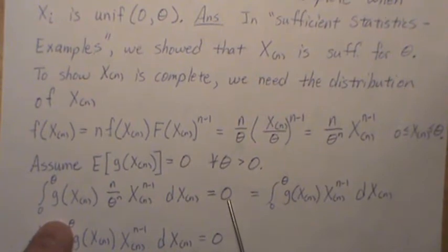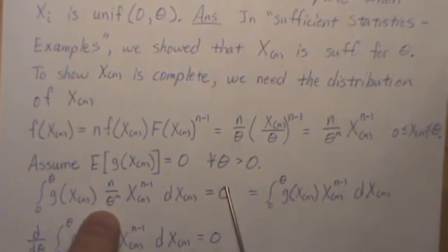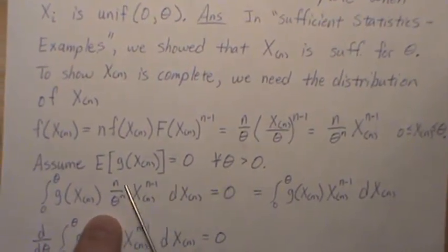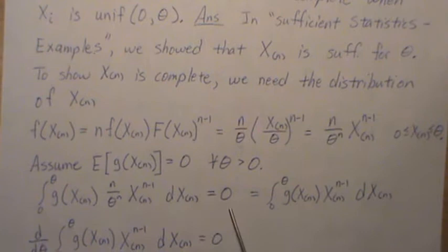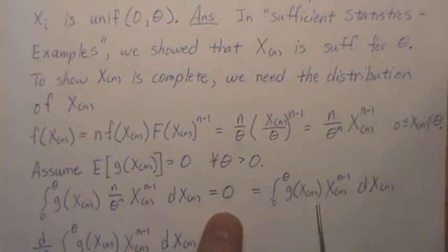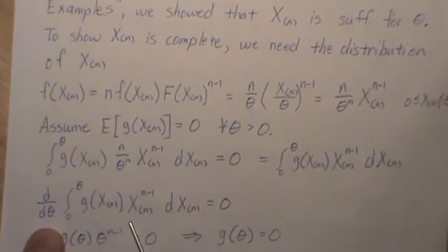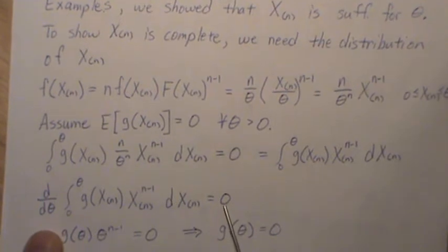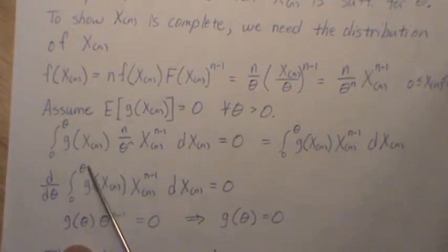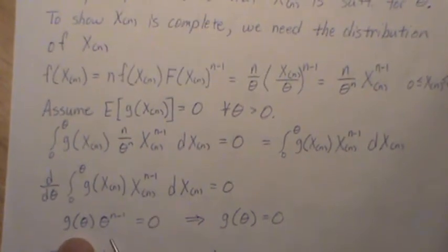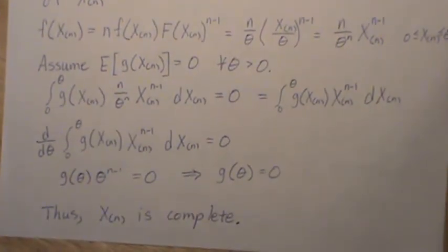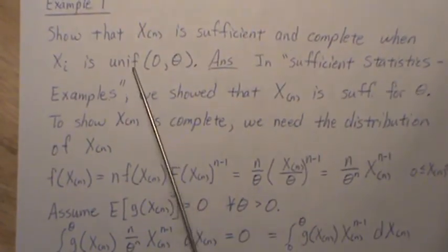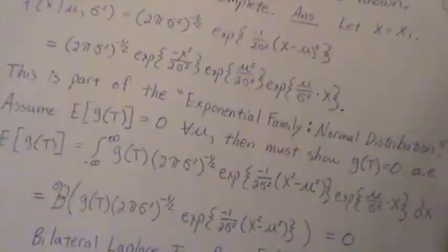Notice that theta and n are not part of the integration, so we can multiply them over and divide, and we get this integral still equal to zero. Taking the derivative of both sides — the derivative of zero is zero — the fundamental theorem of calculus says we just plug in for our variable and it equals zero. This expression is positive so we can divide it over, and that implies g of theta equals zero. Thus the nth order statistic is complete for this family of distributions.